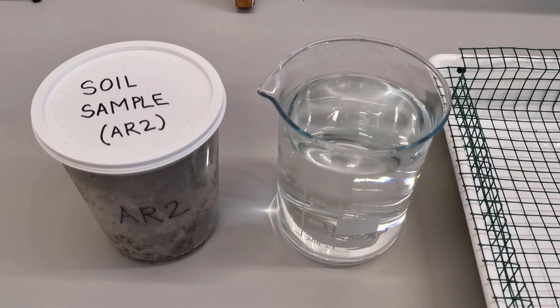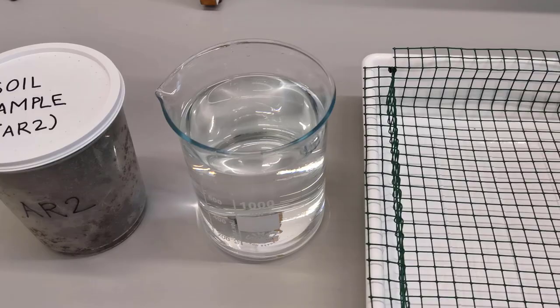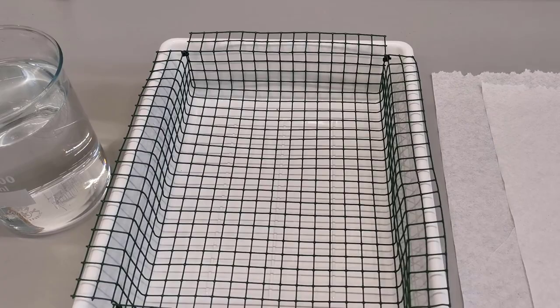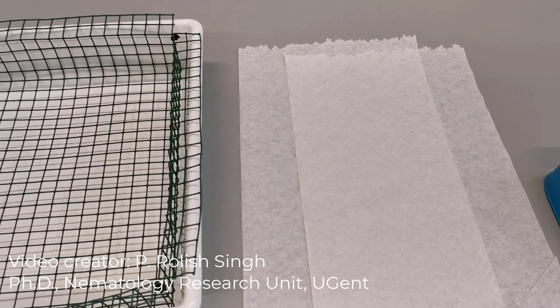Vermiform motile nematodes from soil can be easily extracted by a simple experimental setup which requires a plastic tray, a supporting wire mesh, some tap water and a few tissue papers, and other minor requirements such as beakers, leveling materials, etc.